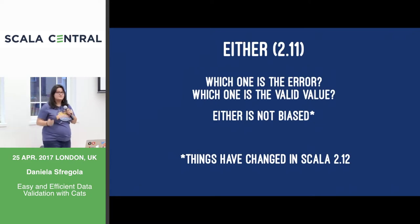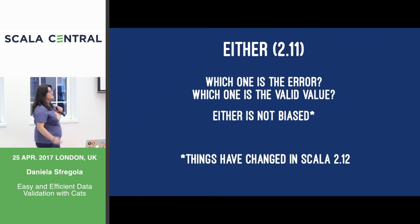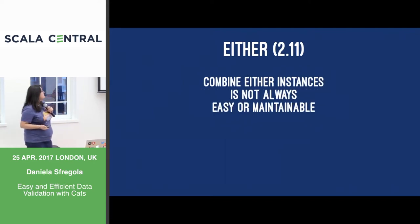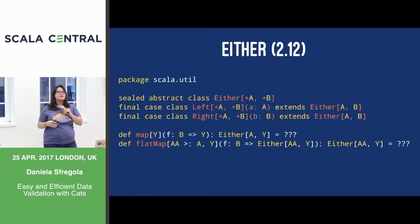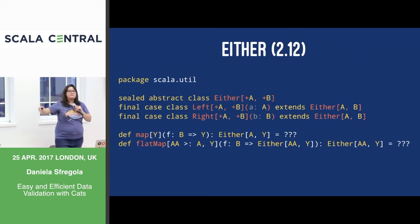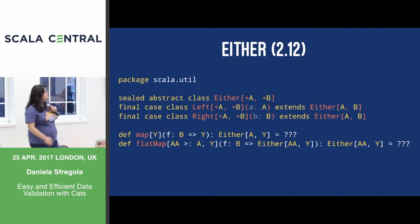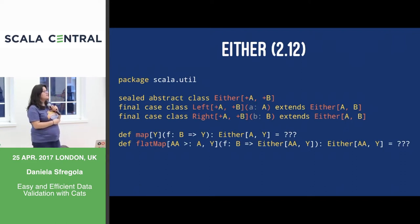Things have changed in Scala 2.12. Our cool friends are saying: hey, upgrade to Scala 2.12, because now things are a lot better. Either needed to be biased — bias just means there is a default way of mapping all the things. Basically same as before, but now we have a map and a flatMap. All they have done is, by default, pick the right projection of Either. So by default, right is the right way.